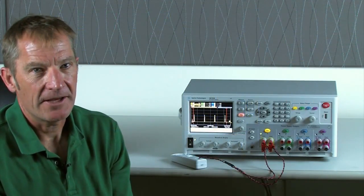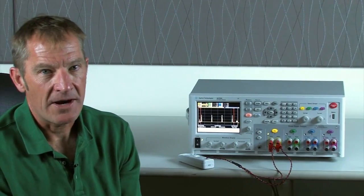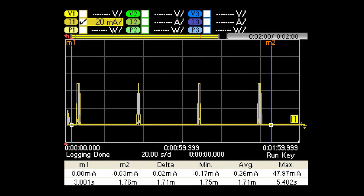Now our data logging is complete. We can see that the wireless transmitter transmits every 30 seconds, and over the two minute period it uses an average of about 260 microamps.